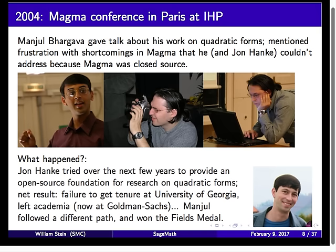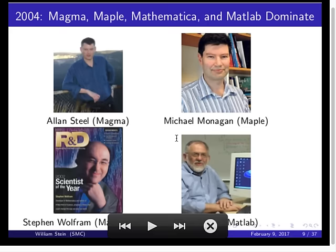What happened was John Hanke put an enormous amount of effort into writing a beautiful package for computing with quadratic forms that over the years got included in SAGE. He did that while he was tenure-track at the University of Georgia, and the result is that he didn't get tenure — he ended up leaving, and now works at Goldman Sachs. Manjul didn't write quadratic forms code, but he got a Fields Medal.